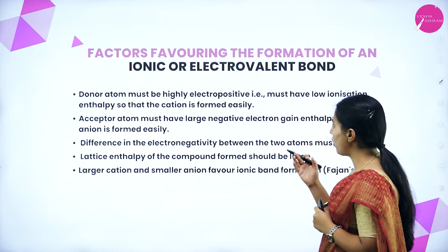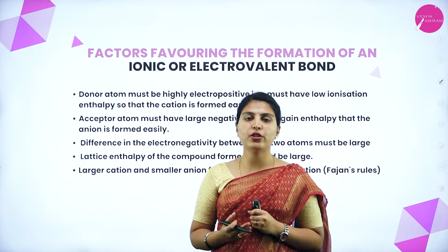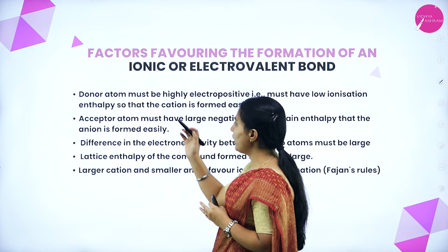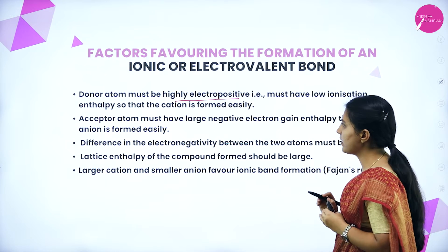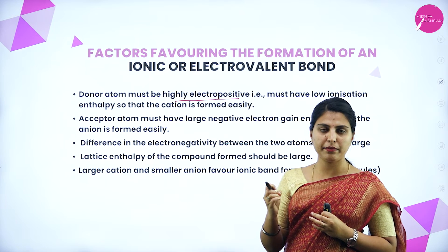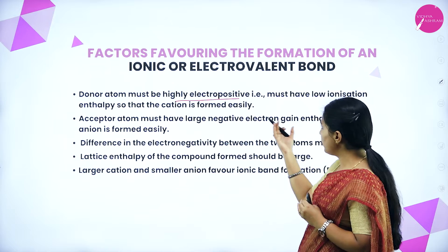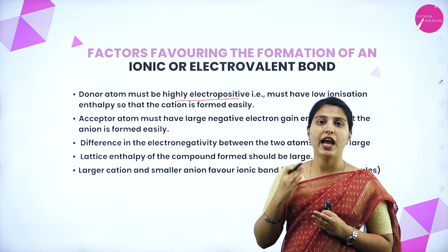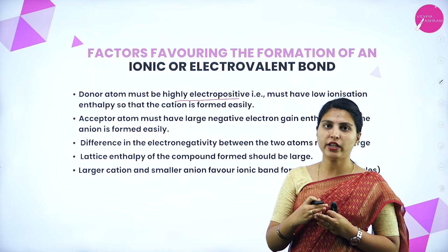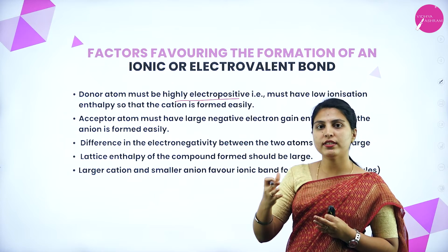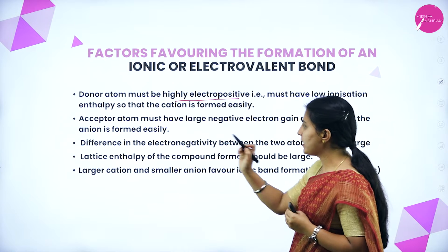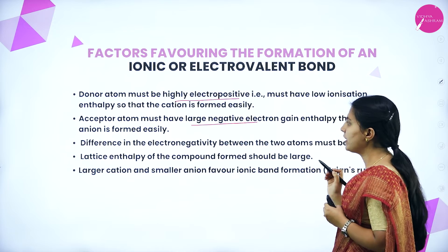Factors favoring the formation of an ionic or electrovalent bond: The donor atom must be highly electropositive — it must have low ionization enthalpy so that the cation is formed easily. Sodium, for example, is electropositive and should have low ionization enthalpy so it can lose its electron easily to quickly form a cation. The acceptor atom must have large negative electron gain enthalpy so that the anion is formed easily.